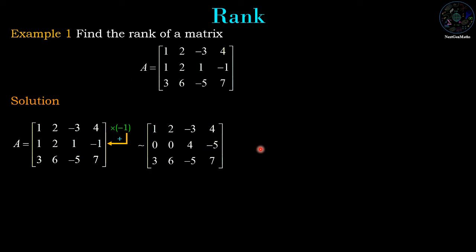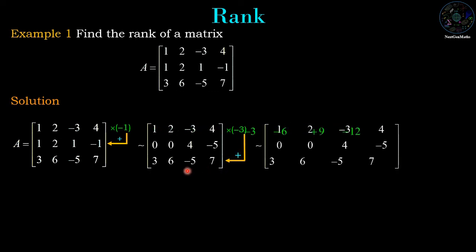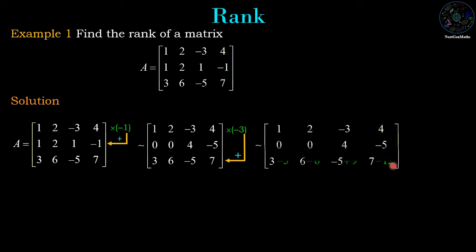In the second step we multiply row 1 by minus 3 and add it to row 3. Row 1 multiplied by -3 gives -3, -6, 9, -12. Adding to row 3: 3-3=0, 6-6=0, -5+9=4, 7-12=-5. So the new row 3 is 0, 0, 4, -5.